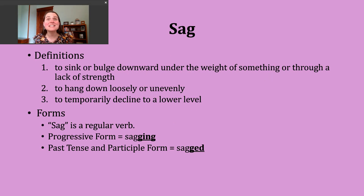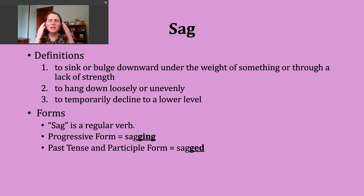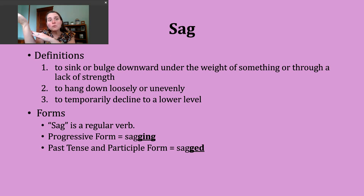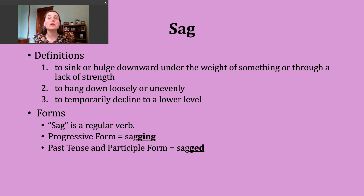The first way you might hear sag used is to mean to sink or bulge downward under the weight of something or through a lack of strength. If you can picture in your mind a tree branch, and now imagine several kids starting to climb on it and the branch sort of sinks — we can use that verb to describe that action. The branch is sagging, being pulled downward through the weight of the individuals climbing on it.